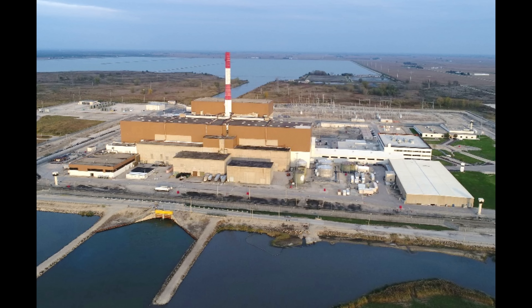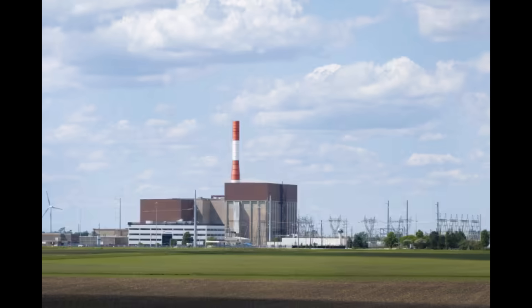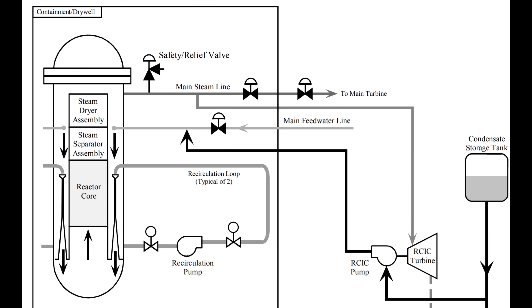Now let's explore the events that unfolded at LaSalle. The date is March 9th, 1988. LaSalle Reactor 2 is being operated in normal conditions, running at 84% power, producing 930 MW of electricity. The core flow rate is at 76% the rated limit, pumping in more than 10,000 kg of water every second. 99% of the control rods are fully extracted, and both recirculation pumps are running, keeping the power stable.